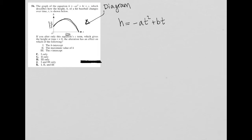Plus bt plus c. So the graph of the equation h equals negative at squared plus bt plus c, which describes how the height h of a hit baseball changes over time t, is shown below.